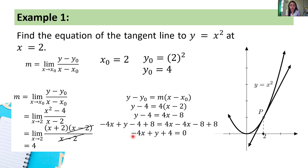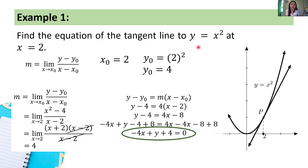So, negative 4x + y + 4 = 0, with the right-hand side equal to 0. This will be the equation of the tangent line to y = x² at x = 2.